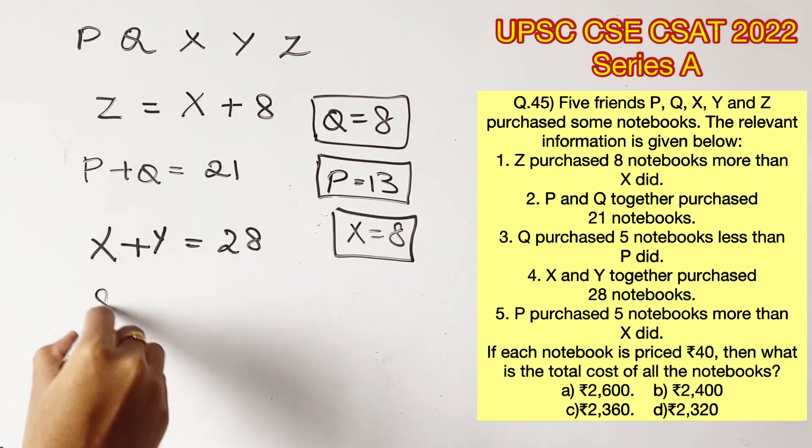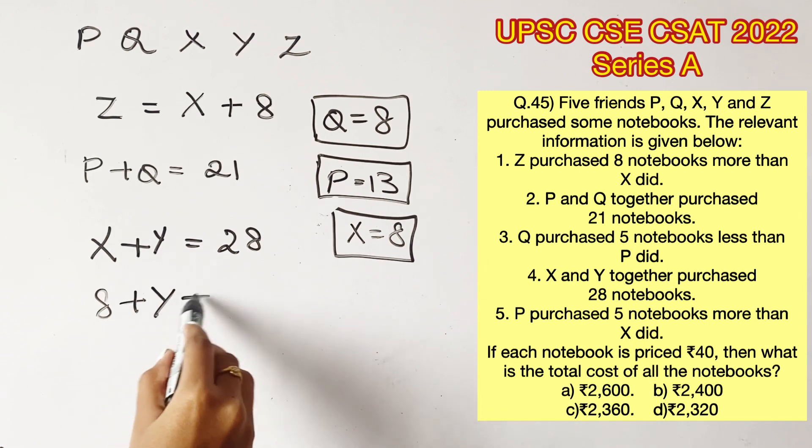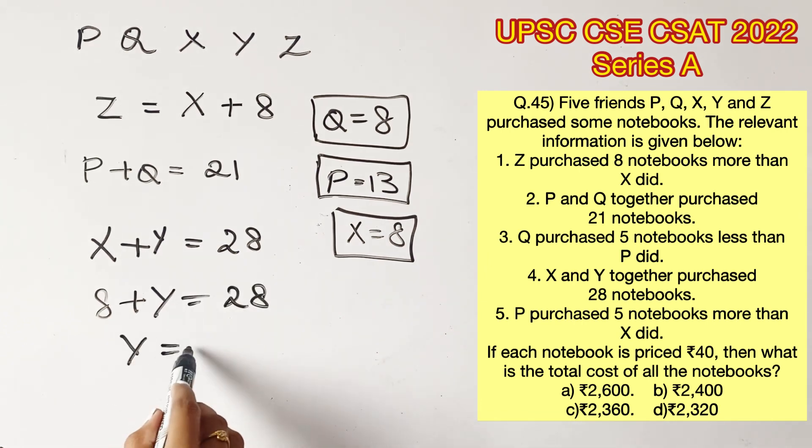Now we can substitute the value of X in this statement, which becomes X plus Y is equal to 28 and Y becomes 20.